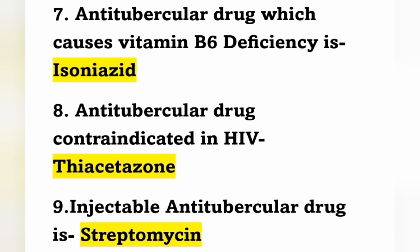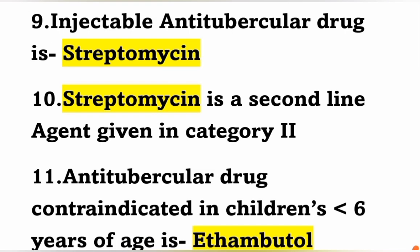Anti-tubercular drug contraindicated in HIV is Thiacetazone. Note: the previous question covered Rifampicin contraindicated in AIDS patients on protease inhibitors; here, the drug purely contraindicated in HIV is Thiacetazone. Injectable anti-tubercular drug is Streptomycin, which is a second-line agent in category 2.